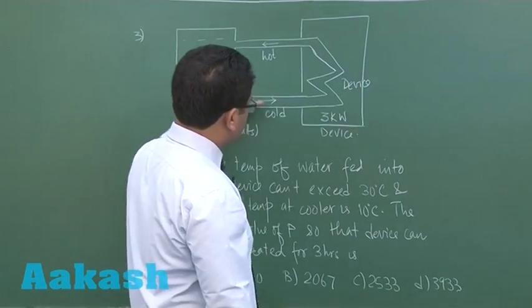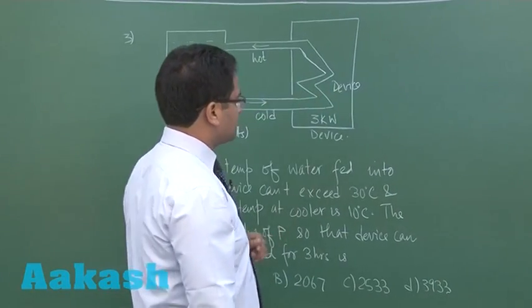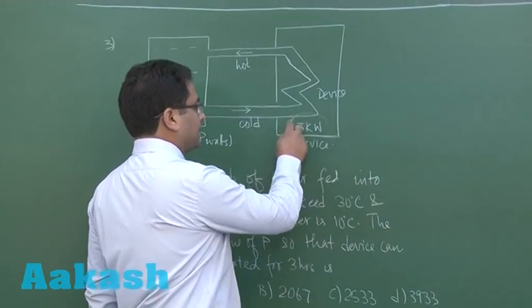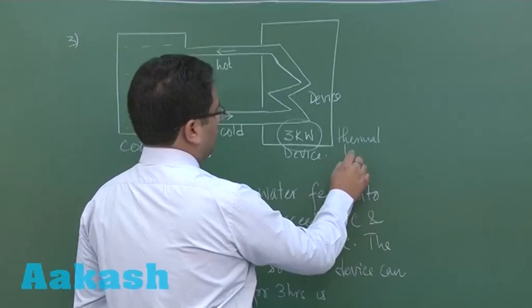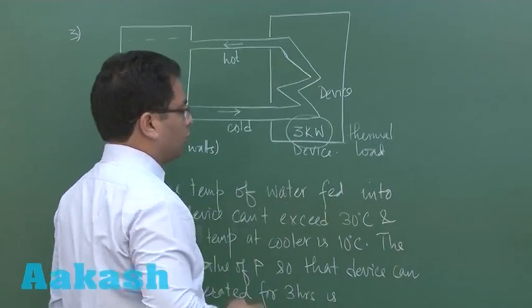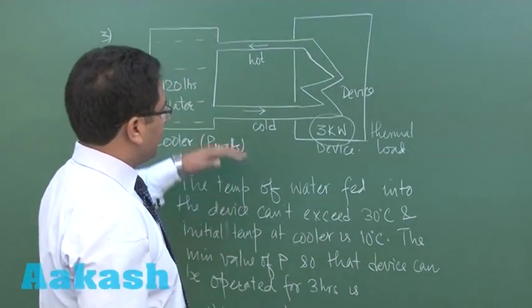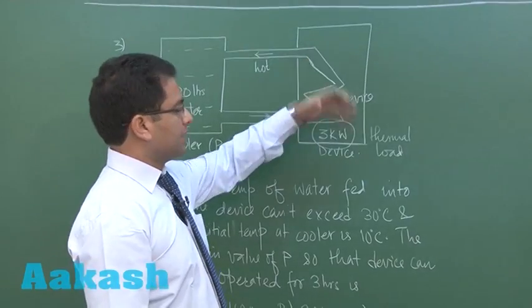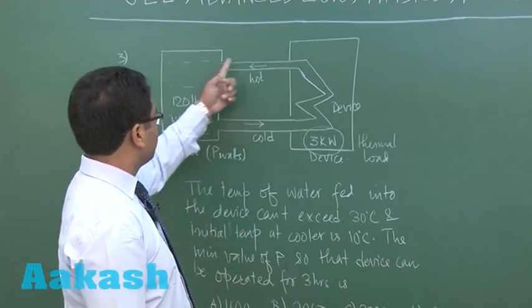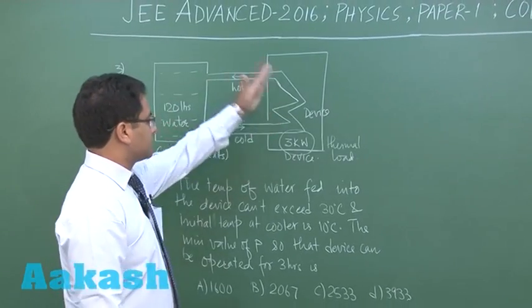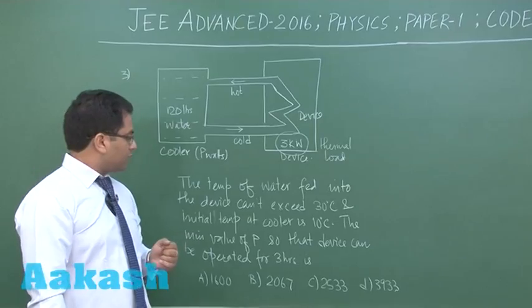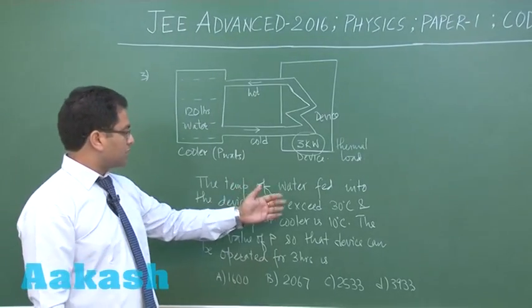Once the water comes out, it is fed into a device that generates a thermal load of three kilowatts. The water gets hotter and is circulated back to the cooler. The cooler cools it again and the circulation keeps going.